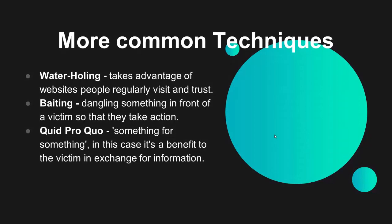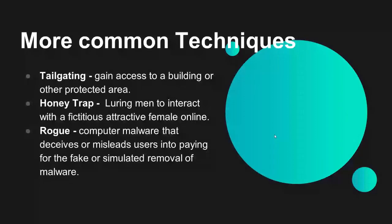More common techniques: tailgating — gaining access to a building or protected area by following somebody else. A lot of you have done this in real life. You go to visit a friend in a community with gates but no actual guard, a car in front opens the gate, and you just follow through. That's the concept of tailgating. In terms of gaining physical access, it's a very effective technique.